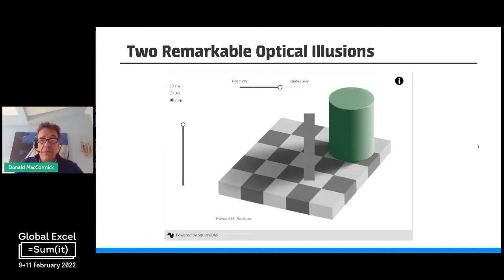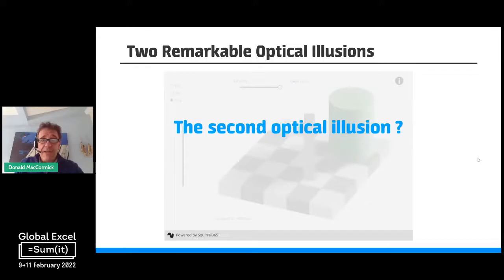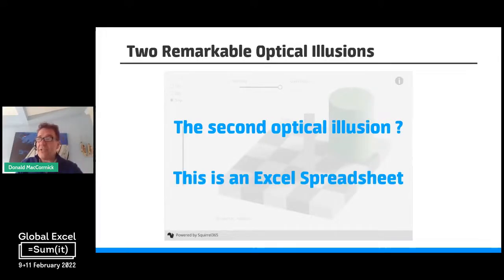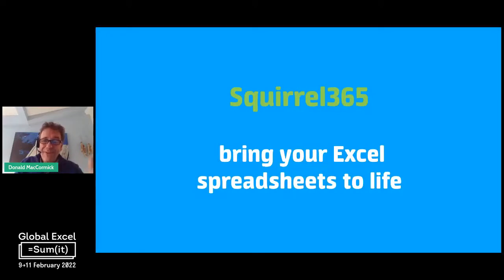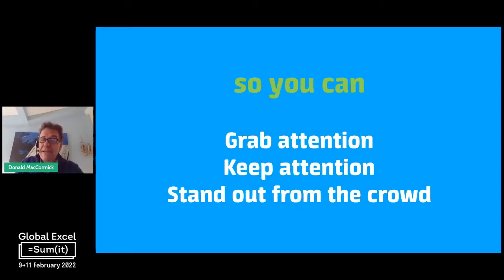That's just to get you thinking about things that aren't quite what they seem. And the second optical illusion is that what you are seeing there is actually an Excel spreadsheet. That's the beauty of Squirrel — we turn spreadsheets into these amazing visualizations. You may not want an optical illusion visualization, but there are many others that you may well want to emulate. Squirrel365 brings your Excel spreadsheets to life with dynamic animated capability so you can grab attention, keep attention, and stand out from the crowd.